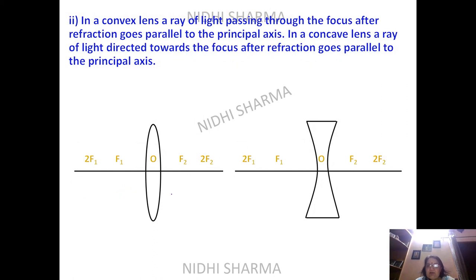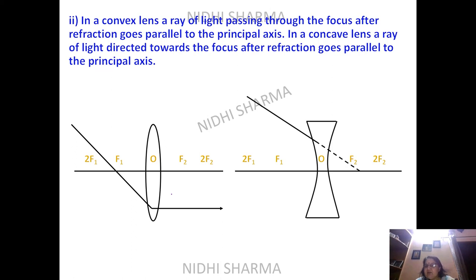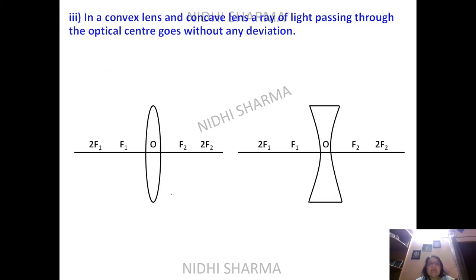Rule number two: if a ray is coming from the focus, it will become parallel to the principal axis. Conversely, a ray coming towards focus — but since a concave lens has a diverging nature — will bend and travel parallel to the principal axis.